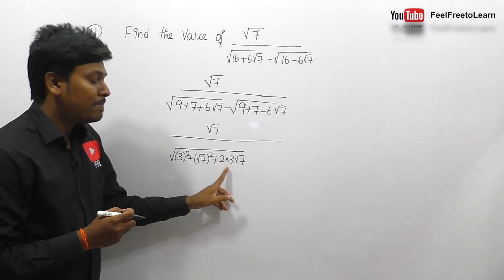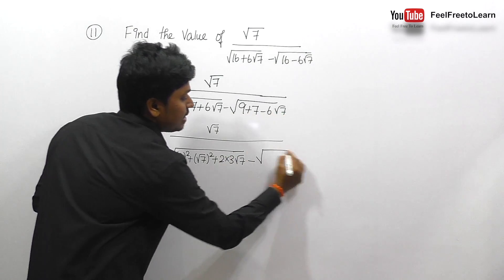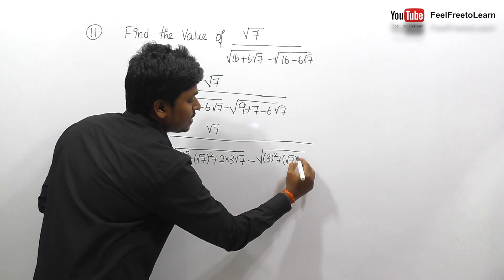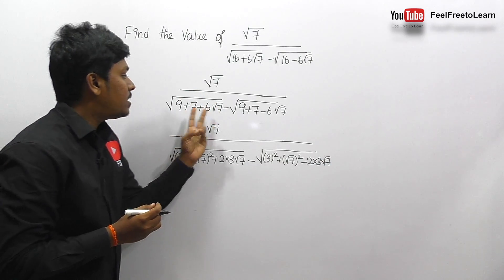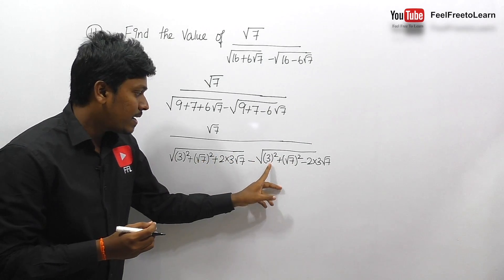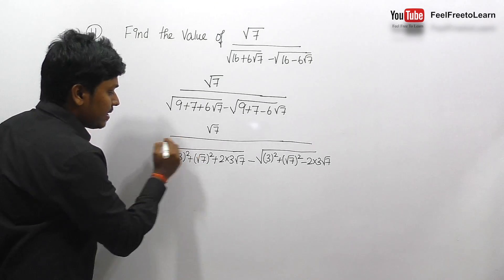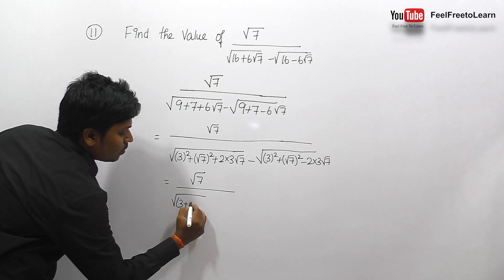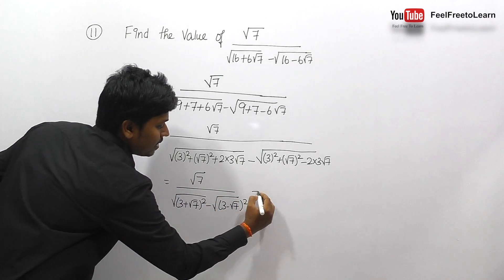I have converted this expression in terms of a²+2ab+b². Similarly, the other part √(9+7-6√7) can be written with 9 as 3², 7 as (√7)², minus 2×3×√7. So both expressions are now converted in terms of (a+b)² and (a-b)². This gives us √7 divided by √((3+√7)²) minus √((3-√7)²).